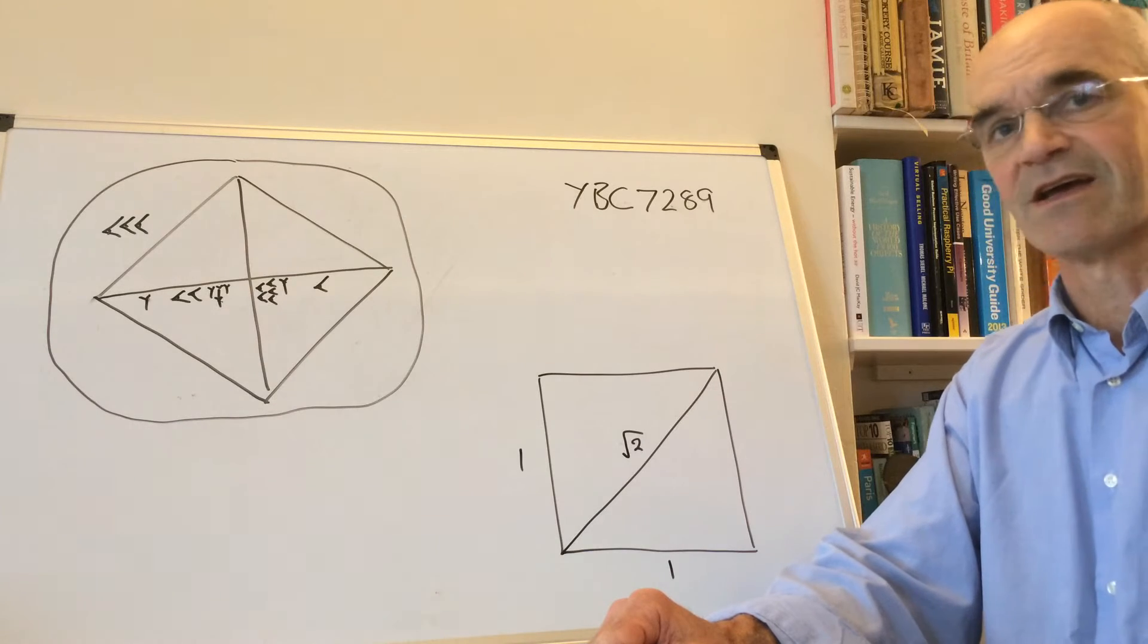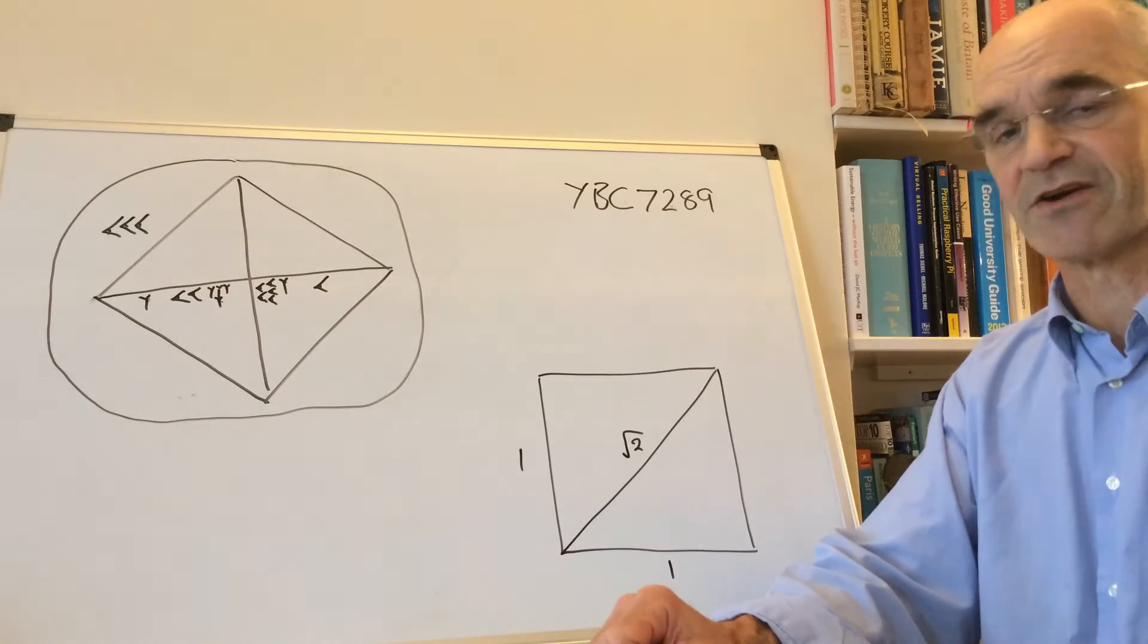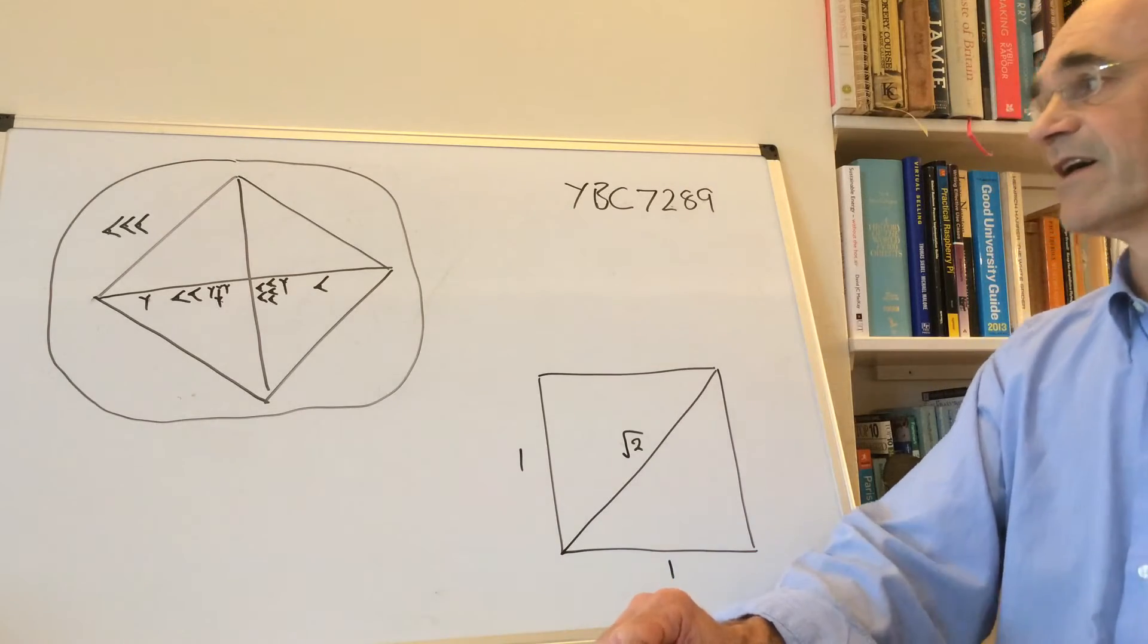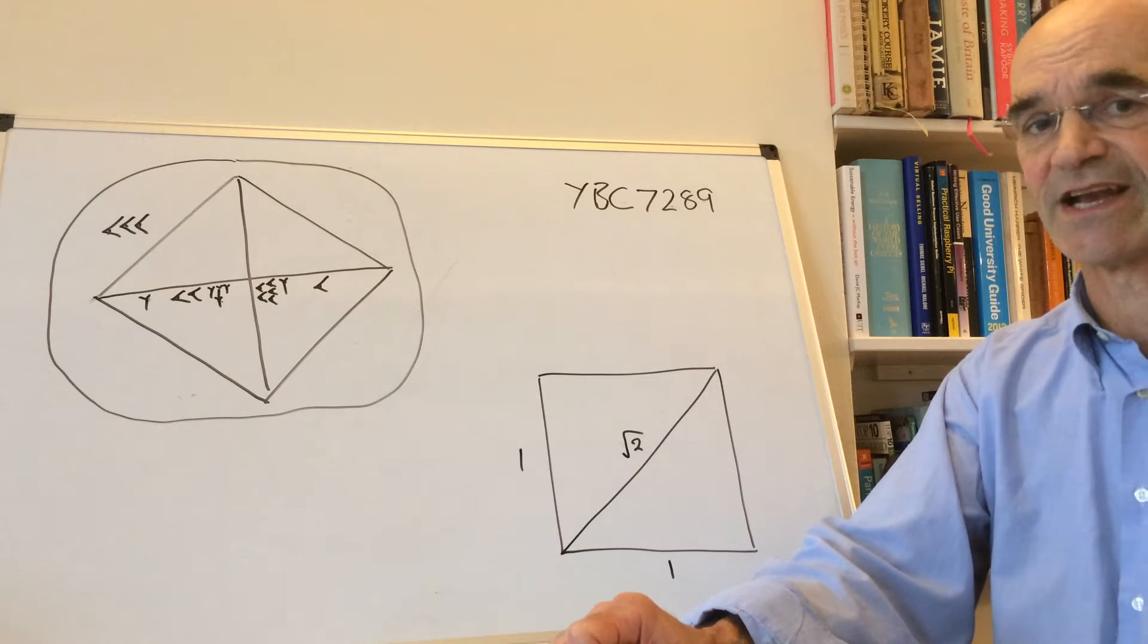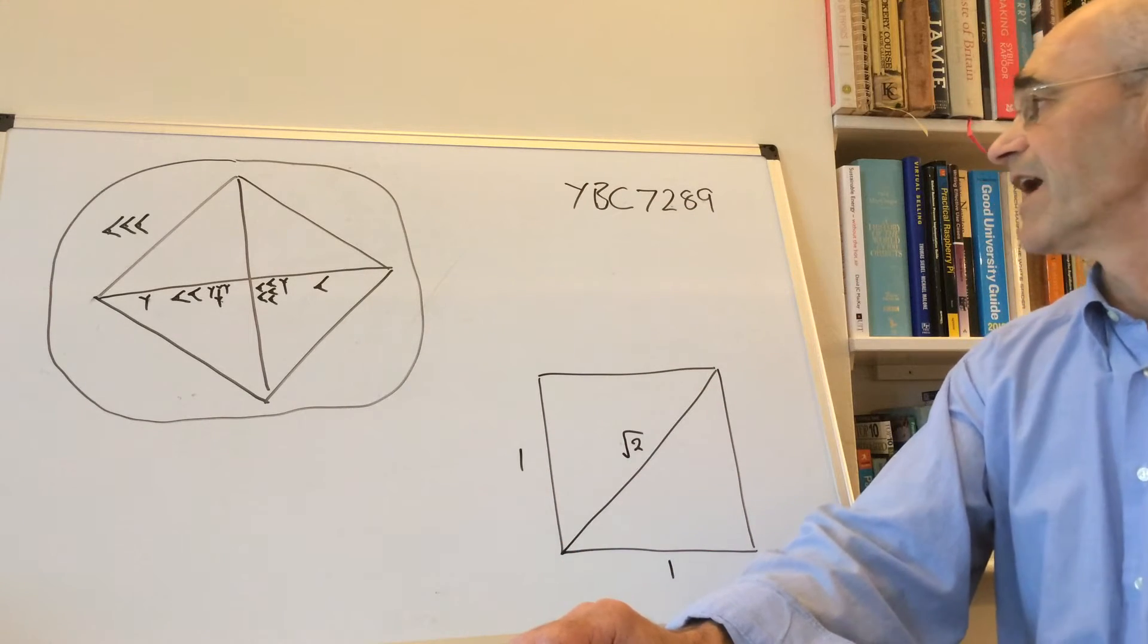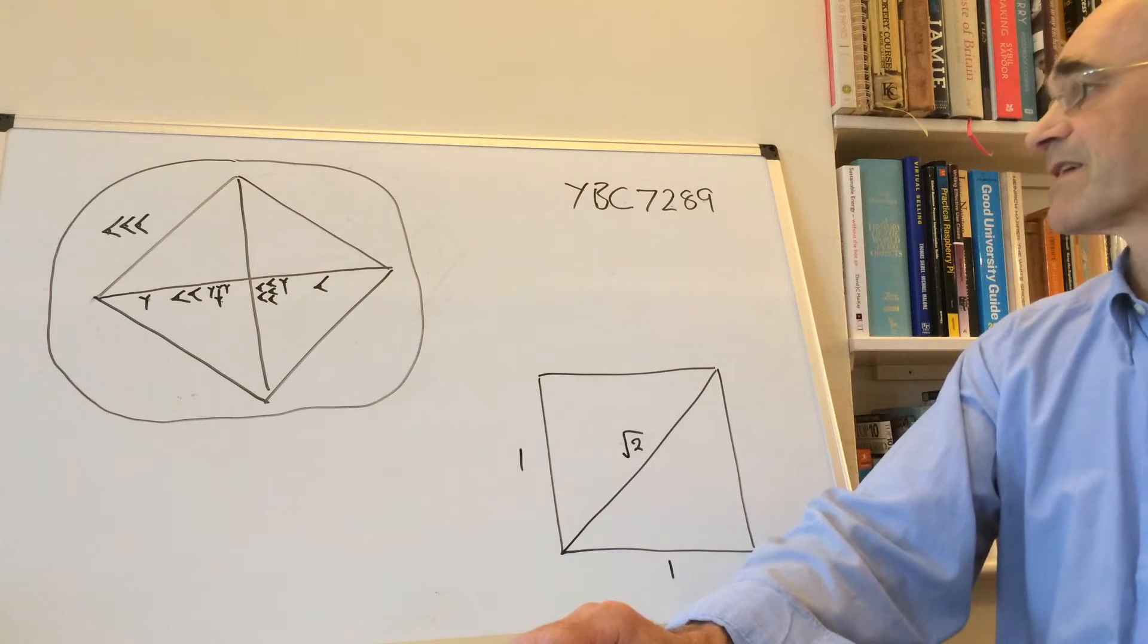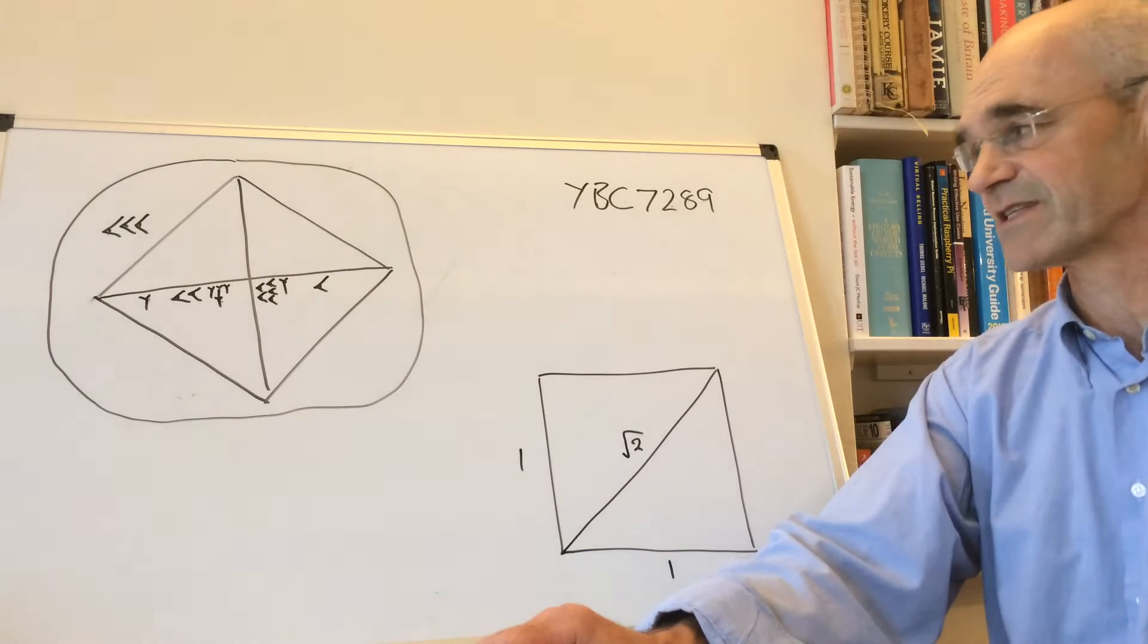Pythagoras and Euclid and so on, but it's been known about a lot longer than that. To give you an idea of how long, I've drawn out something called YBC 7289. YBC stands for the Yale Babylonian Collection, and 7289 is the number of the piece in the Babylonian collection of Yale University.